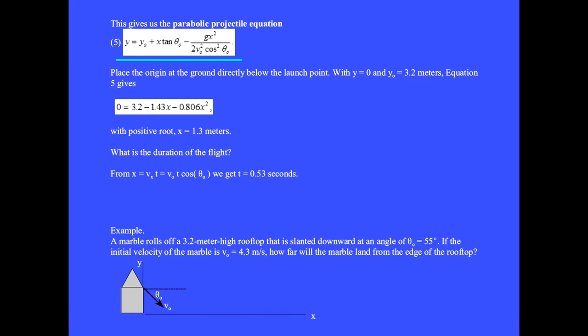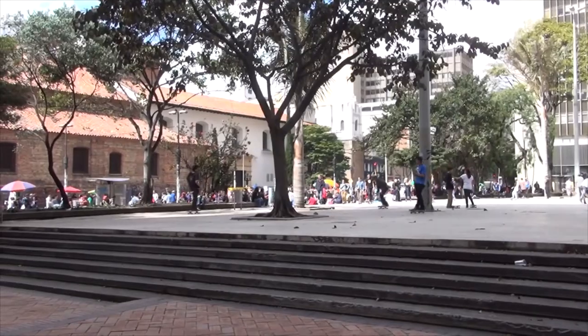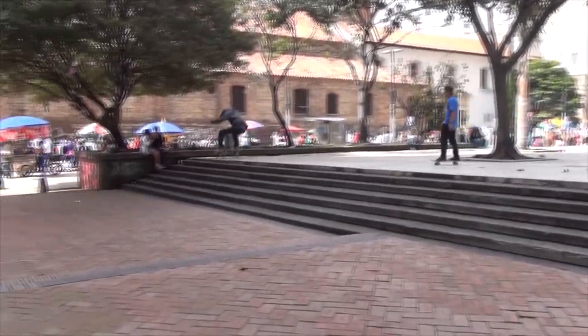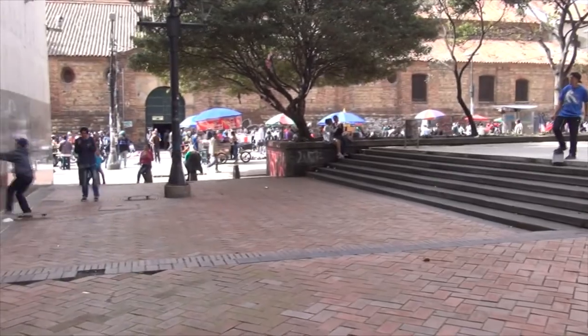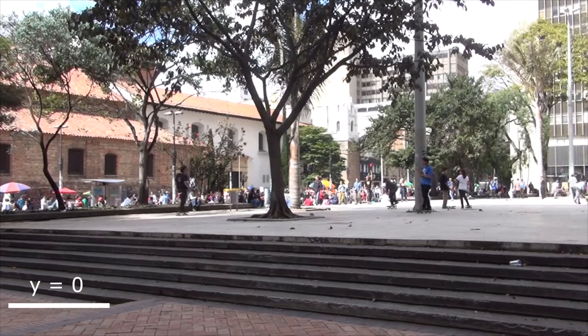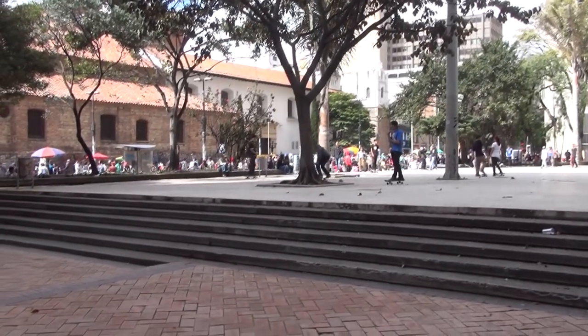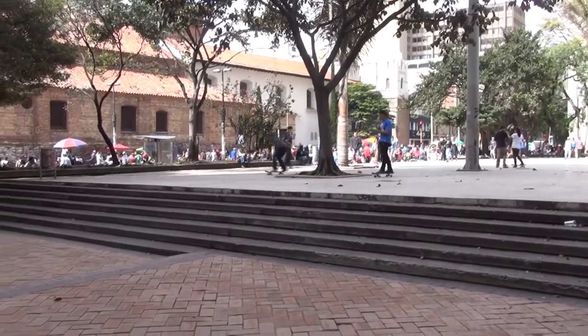Solving the parabolic equation for v₀ gives the initial velocity equation. For example, here is a skateboarder in Bogota. This person lands at the ground, so we have y equals 0. The initial launch height, y₀ equals 1.2 meters. The initial launch angle, θ₀ equals 20 degrees.